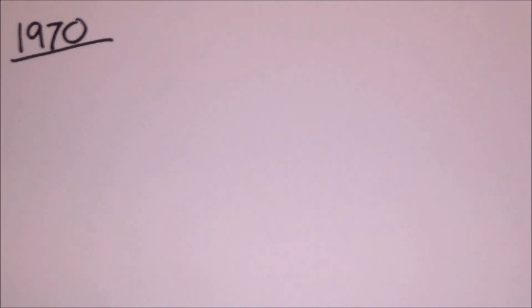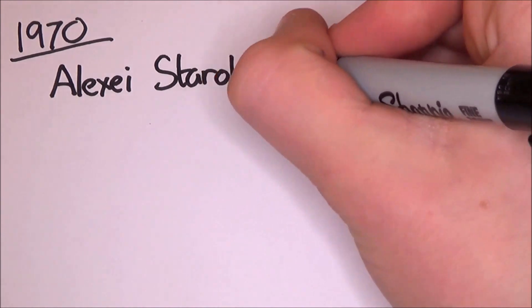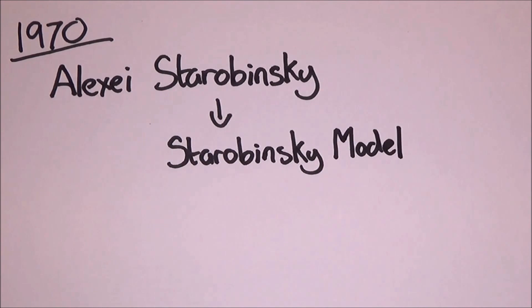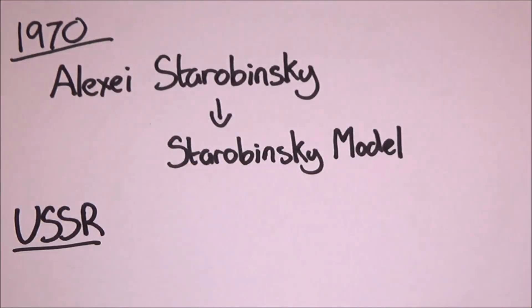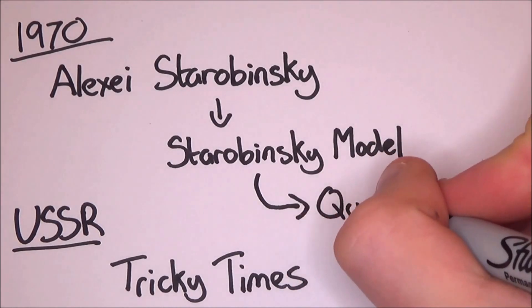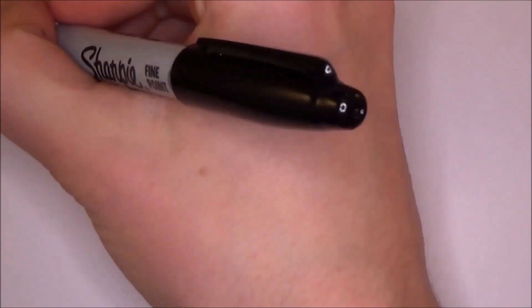There is an interesting bit of history about inflation too. In the 1970s, a Russian scientist named Alexei Starobinsky came up with a theory which came to be known as the Starobinsky model. However, because of the Soviet Union at that time, he couldn't communicate with other universities outside of the Soviet Union. Nobody knew anything about his theory. The theory was based upon complex ideas about quantum gravity which made it really difficult to understand.